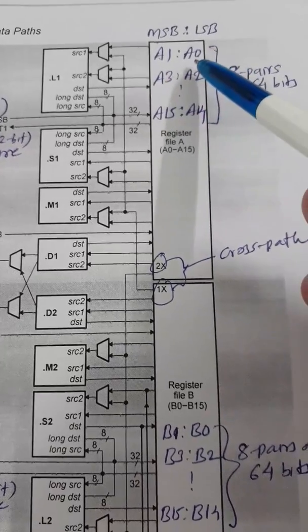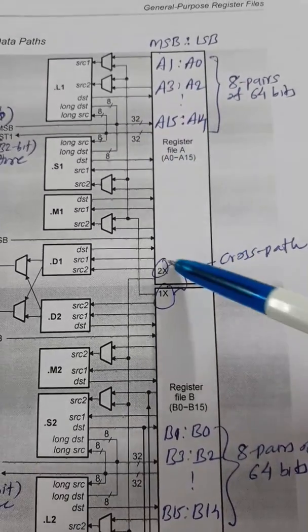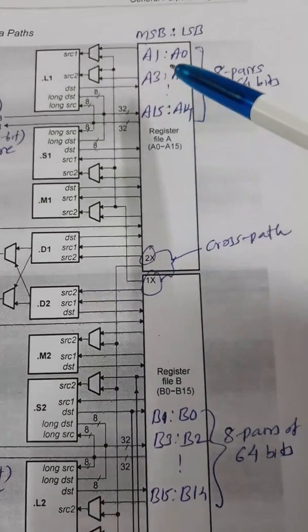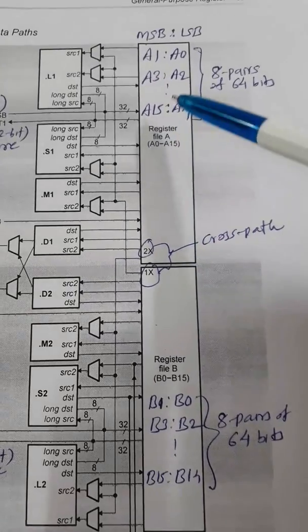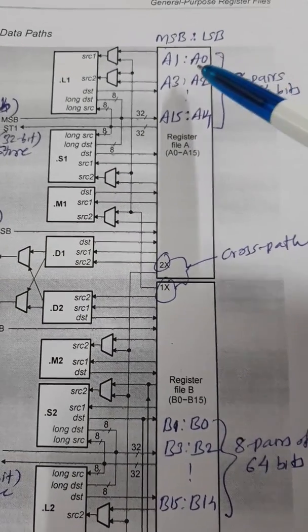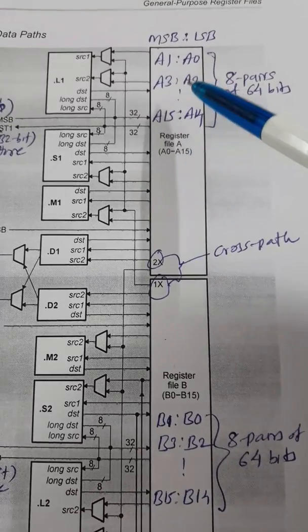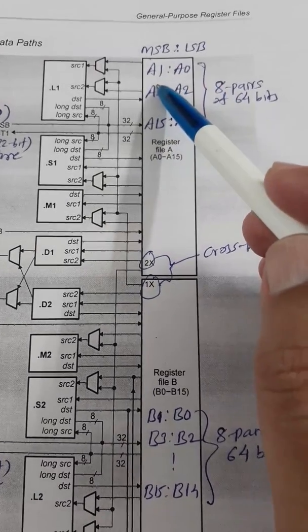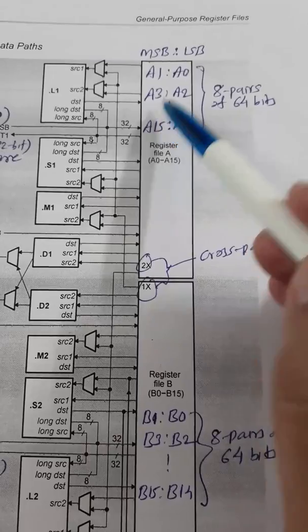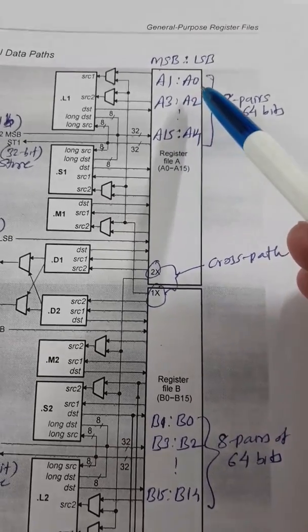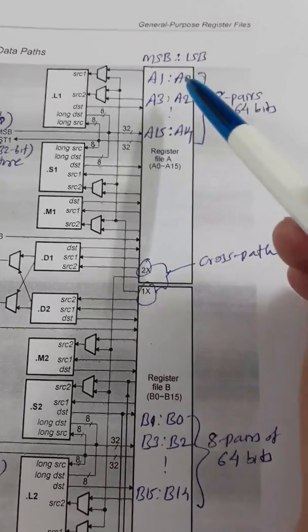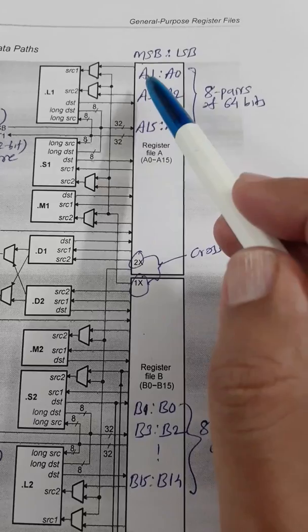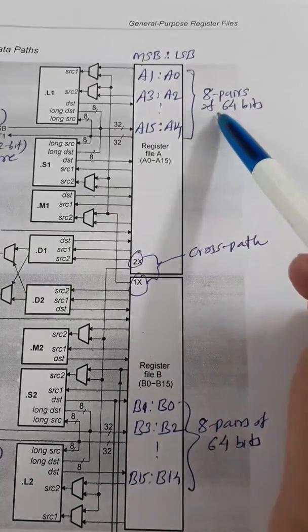There are two different paths for the register files, both paths are almost identical. In A path we have 16 registers of 32 bits each. So A0 is 32 bit, A1 is 32 bit, A2 is 32 bit, A3 is 32 bit. There are valid pairs also, that means A0 and A1 will form a register pair. So 32 bit and 32 bit, all together 64 bit data can be stored together using this pair.